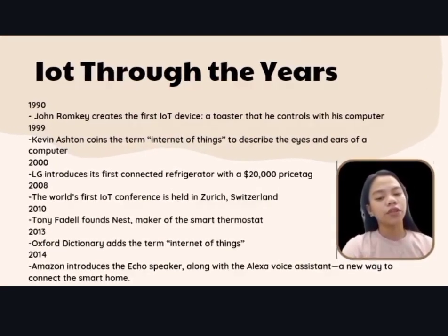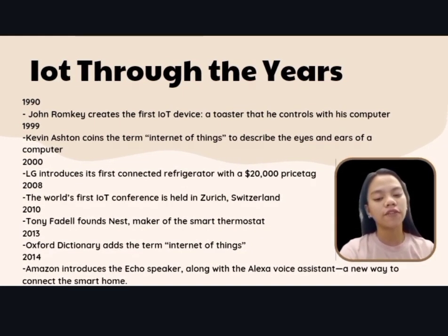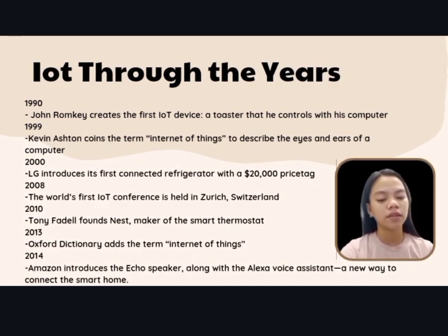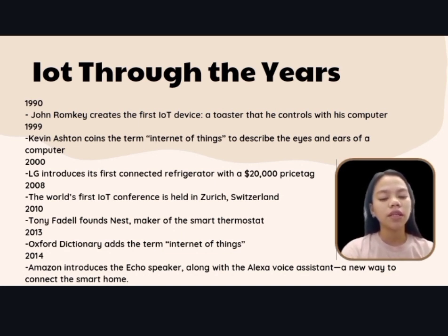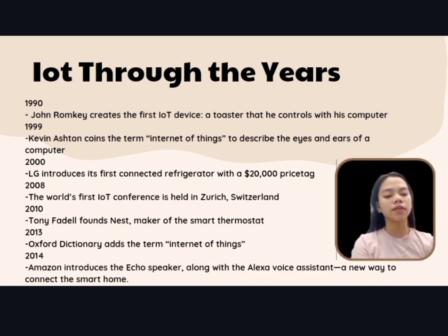IoT timeline: in 1990, John Romkey created the first Internet of Things device, which was a toaster that he controlled with his computer. This momentous achievement marked the beginning of a new age in technology, where physical devices could be connected to the internet and communicate with other devices including computers and smartphones.